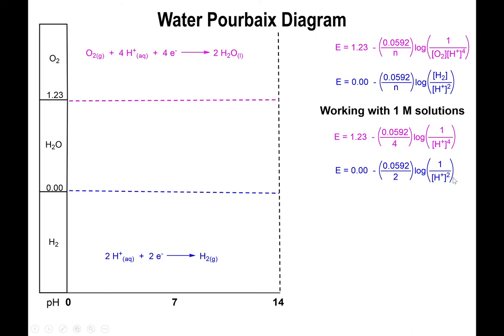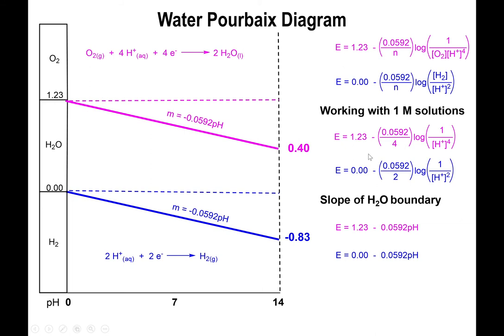If you bring the negative four exponent to the front, four and four will cancel out and you end up with negative log of H+. If you bring the negative two exponent out of the log, the twos will cancel out. For both instances you end up getting 1.23 or 0.00, the original E° potential of the half reaction, minus 0.0592 times the pH.